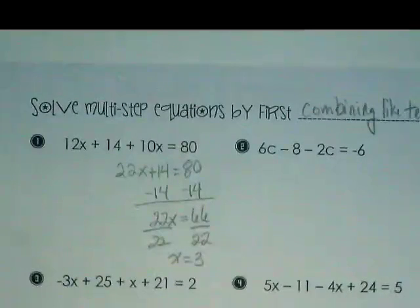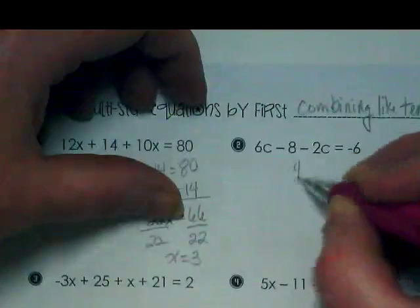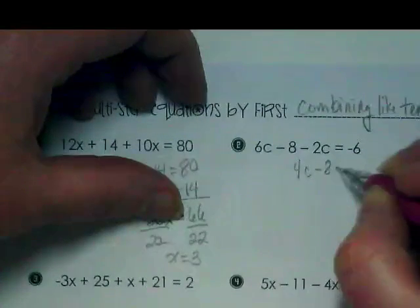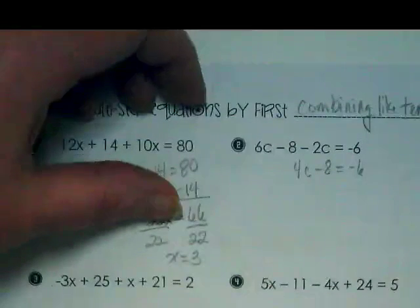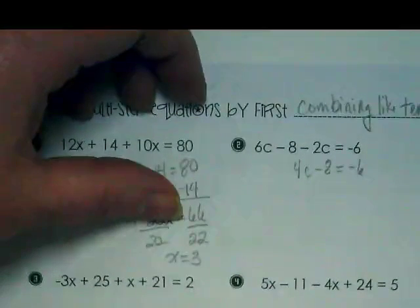Let's look at number two. What needs to be combined first? 6c. And what does that become? 4c minus 8 equals negative 6. What is my next terms to combine?